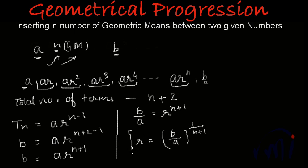So here we have got the value of r when we are supposed to insert n number of means between any two given numbers and after that by putting this value of r in this general form of any geometrical progression, we can find the new progression.